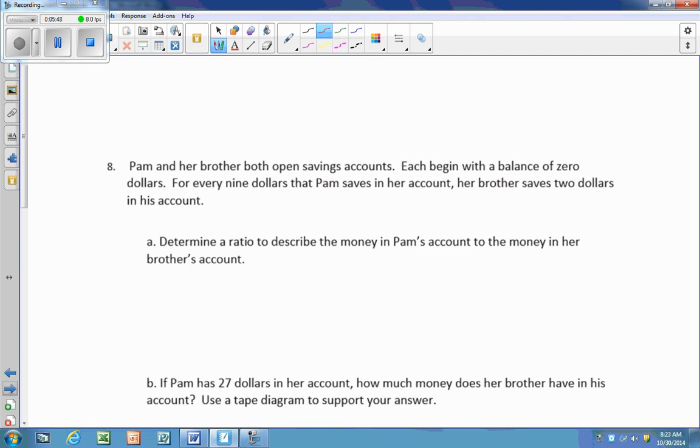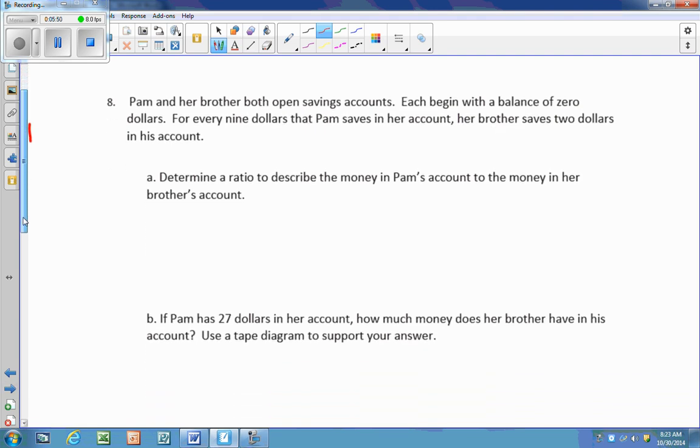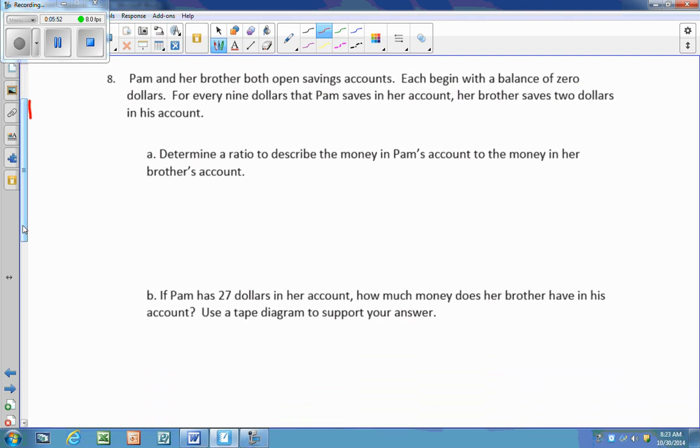Number eight, Pam and her brother both open savings accounts. Each begins with a balance of zero. That's important. For every $9 that Pam saves in her account, her brother saves $2. So determine the ratio to describe the money in Pam's account to the money in her brother's account. So Pam, $9. Her brother, $2.